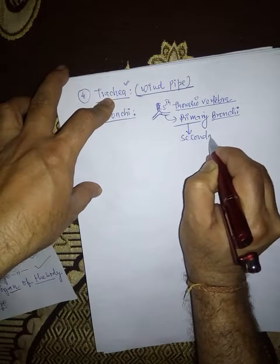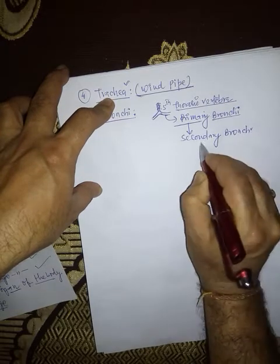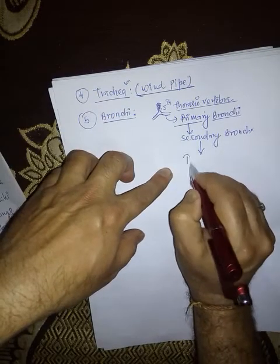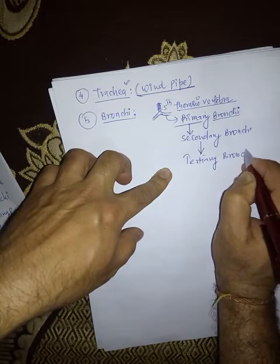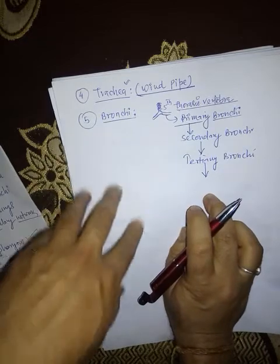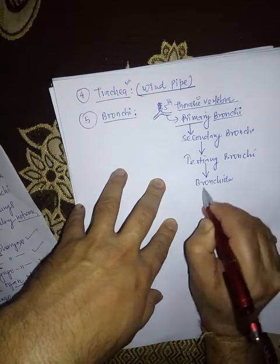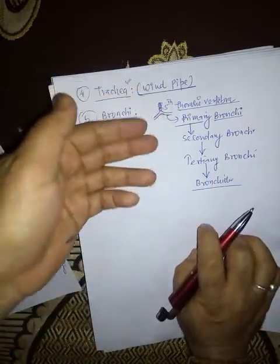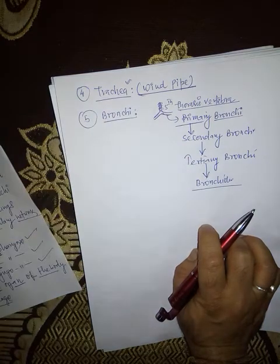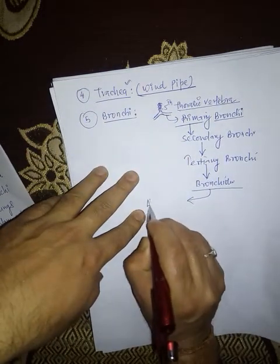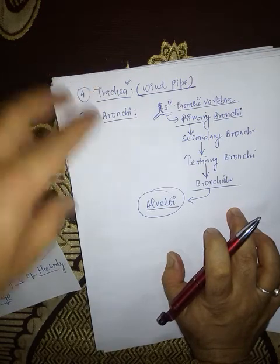These primary bronchi further divide into smaller branches known as secondary bronchi. Secondary bronchi then further divide into tertiary bronchi. Tertiary bronchi further divide into bronchioles. Bronchioles enter inside the alveoli. We will discuss about the alveoli in the next part.